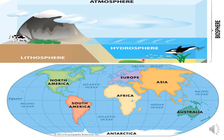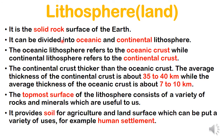One more thing: the land inside the ocean is less thick, while continental land is thicker. The continental crust is thicker than the oceanic crust. The average thickness of the continental crust is about 35 to 45 km, while the average thickness of the oceanic crust is about 7 to 10 km.